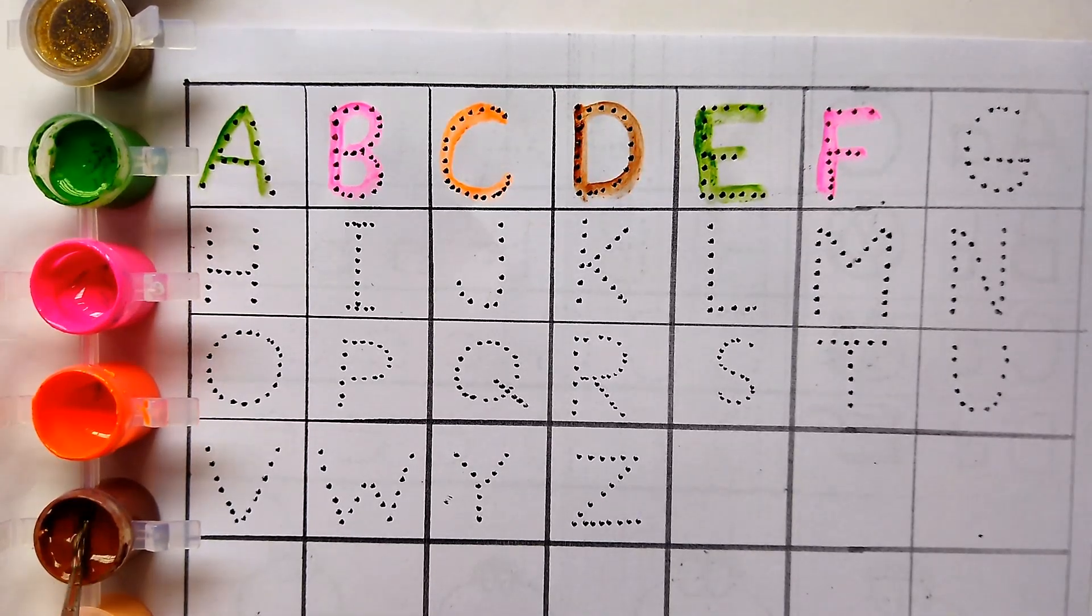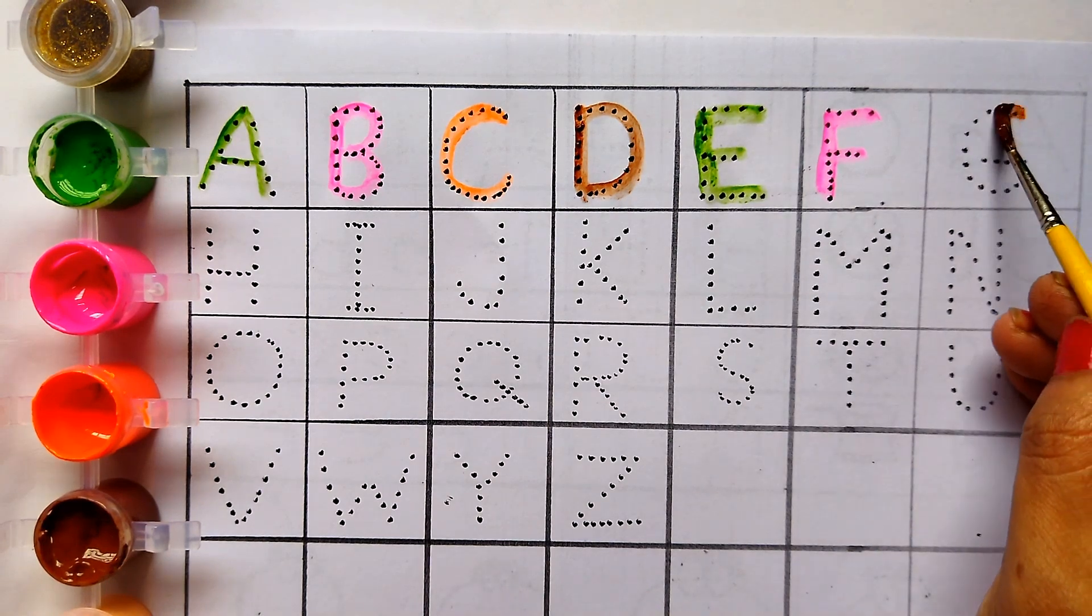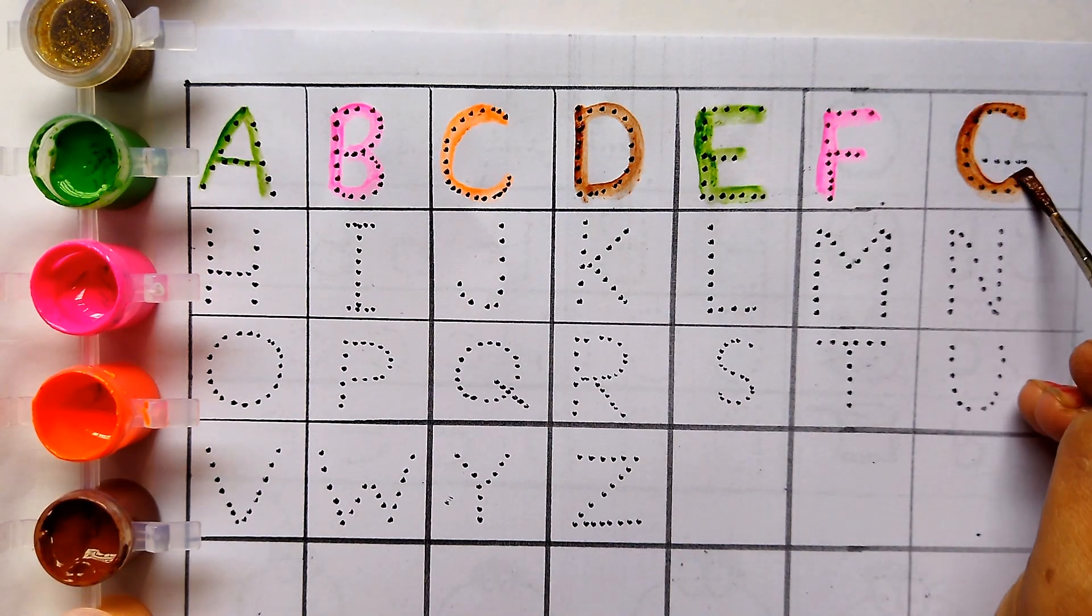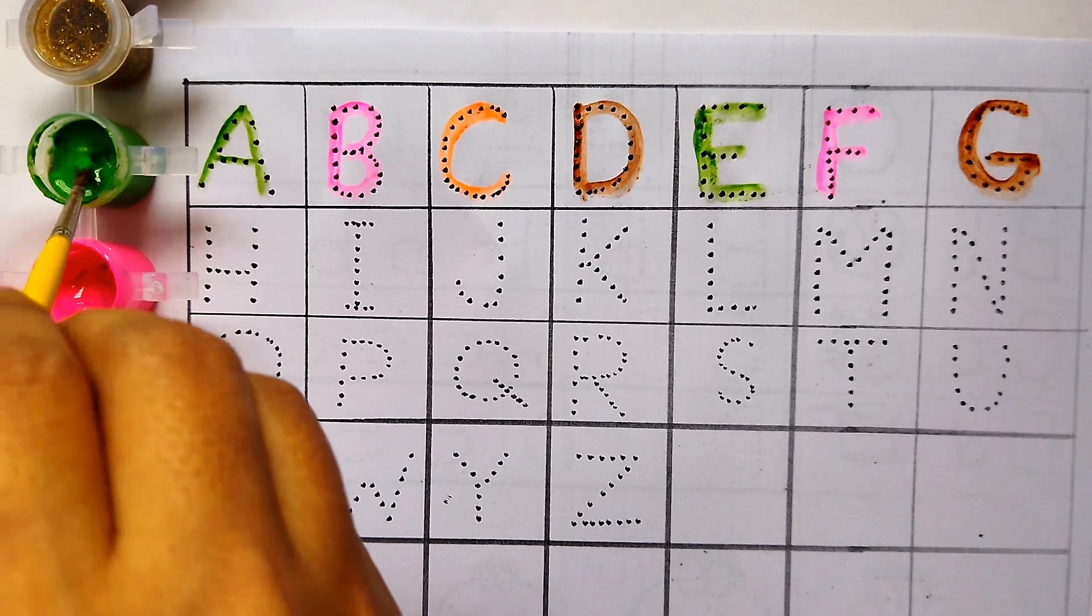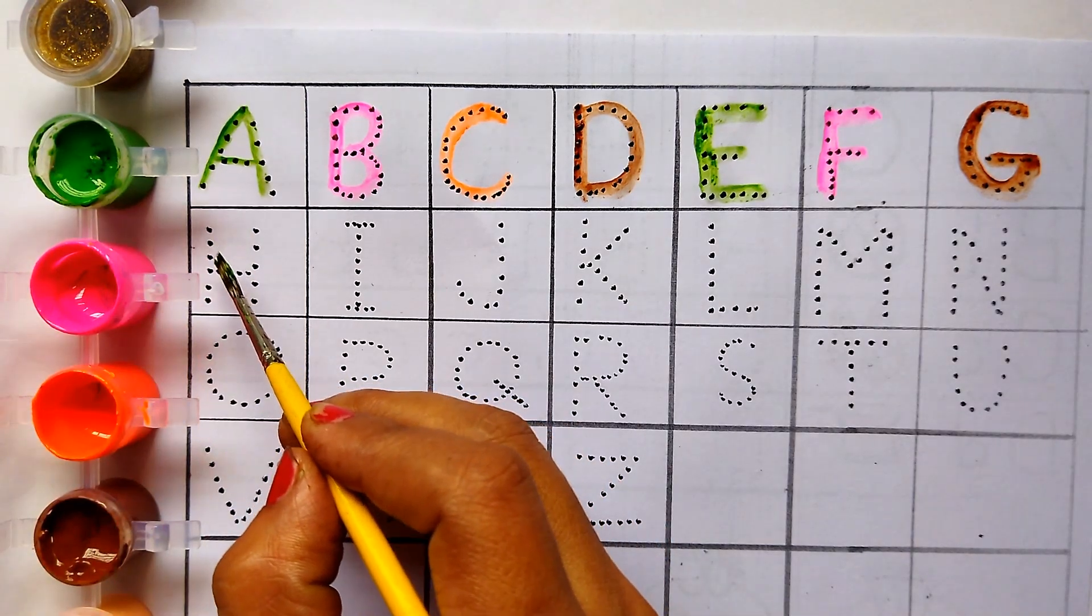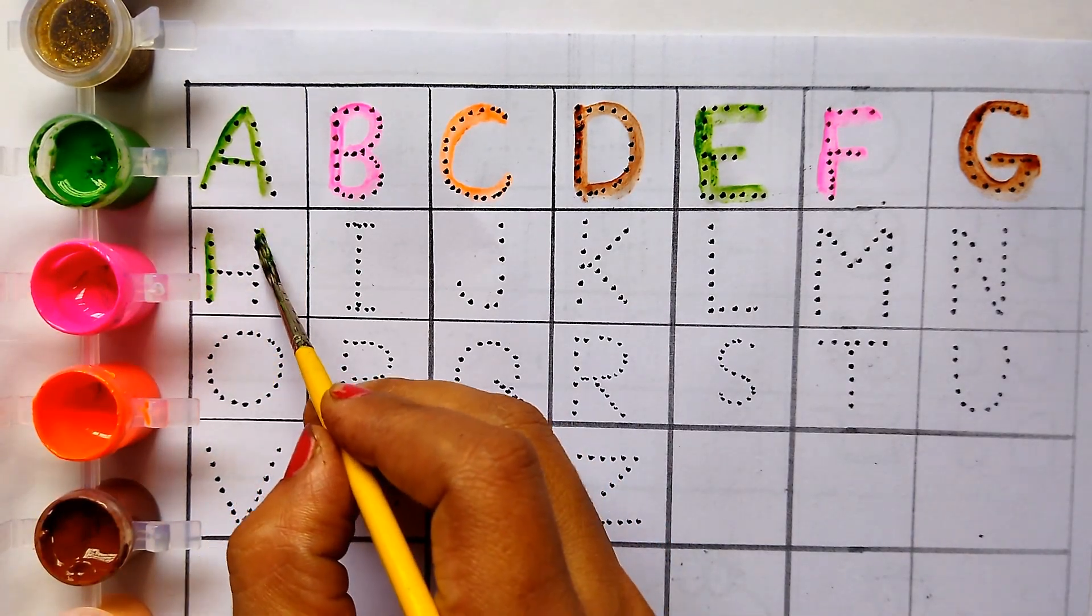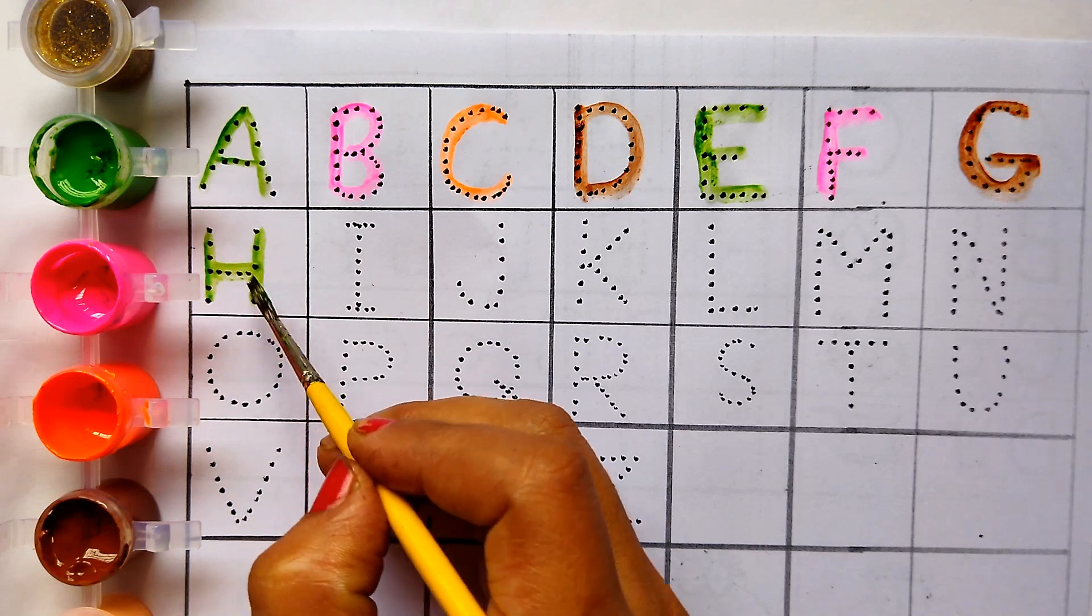Brown colour G. G for gun. Green colour H. H for hen.